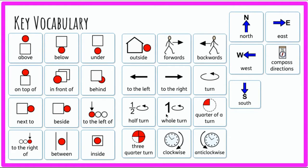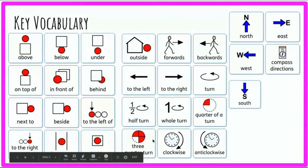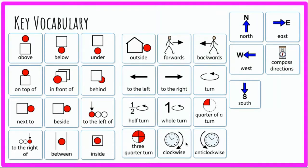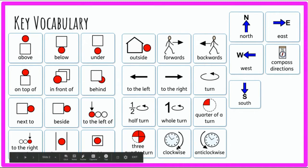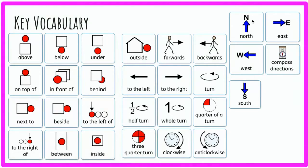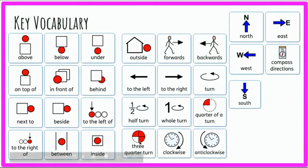We've also used half a turn, a whole turn, quarter of a turn, three quarters of a turn, clockwise — and when we talk about clockwise we talk about the direction of the hands — and anti-clockwise, which is the hands going the opposite way. We've also used compass directions: north, east, west, and south. Today we are going to concentrate on left, right, forward, backwards, and all types of turns, clockwise and anti-clockwise.